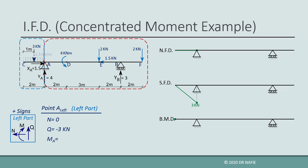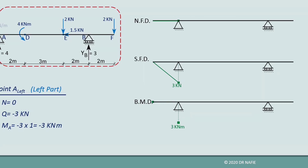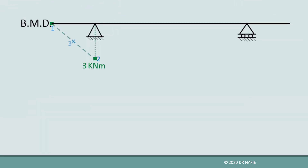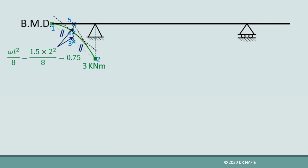The bending moment is calculated by taking the moment of all forces in the left part about point A. The left part only contains the 3 kN equivalent force, multiplied by an arm of 1 meter, rotating in the negative direction, giving a moment of negative 3 kN·m. This value is drawn on the diagram at point A and connected to the value at point C using a parabola, due to the presence of the uniform load, as detailed in a previous lecture.